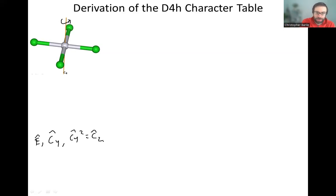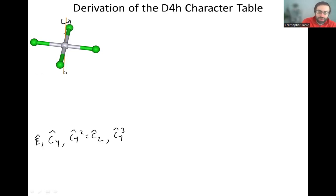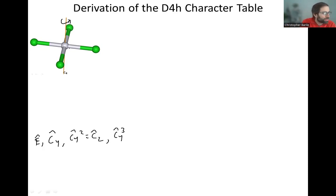So C2 is a unique operation. And then we could do a C4 three times as well along that axis. I'm thinking about that as our principal rotation axis, and we define the principal rotation axis — our highest order n — as the z axis.